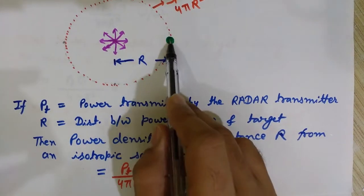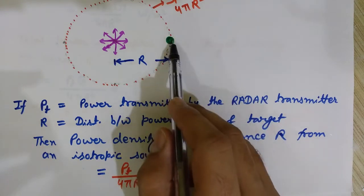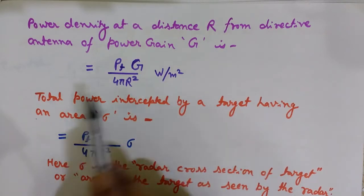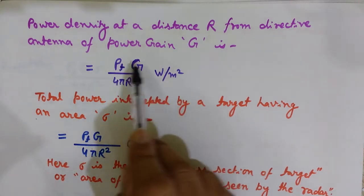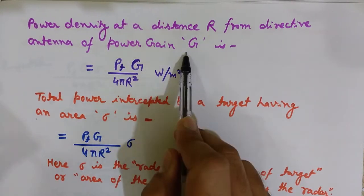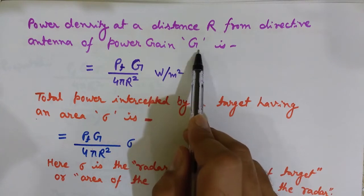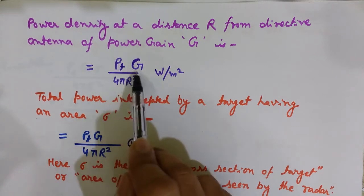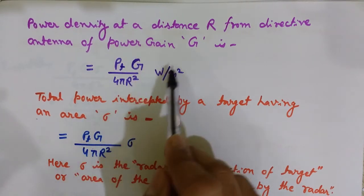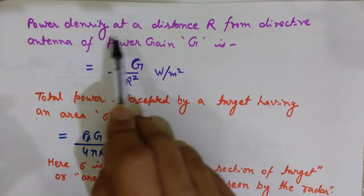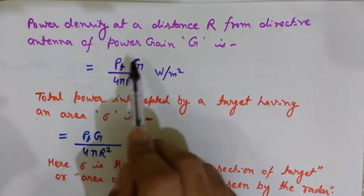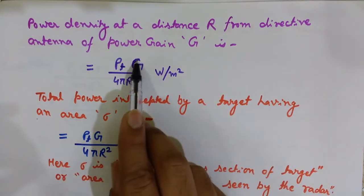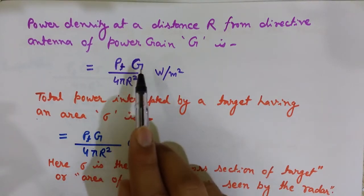Since radar systems generally use directive antennas, not isotropic antennas, if G is the power gain of the directive antenna, then multiplying the previous expression PT over 4πr² by G gives the power density at a distance r from the directive antenna having power gain G.